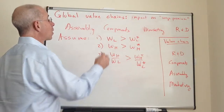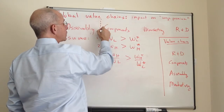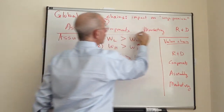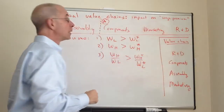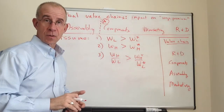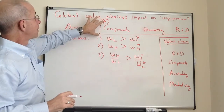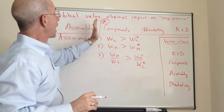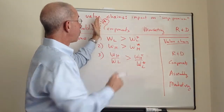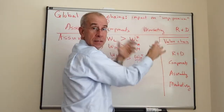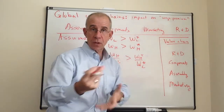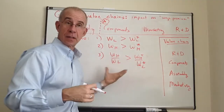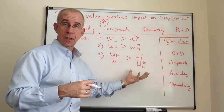We're going to draw an arbitrary line between these two activities. Before any of the changes we're going to analyze, the foreign country is where assembly takes place, and beyond this point all of these activities — components, marketing, R&D — take place in the home country. So we start out with a distribution of tasks and a distribution of relative wages in the two countries.